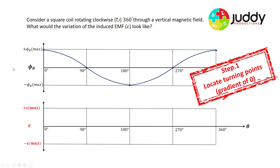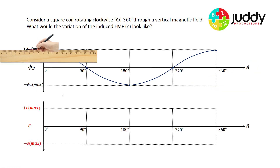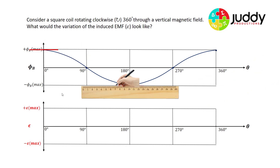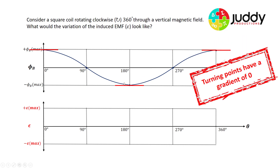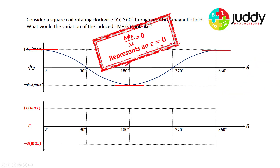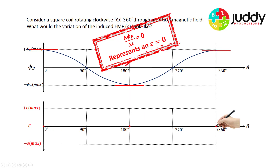First, let's locate the turning points of the magnetic flux versus angle graph, as these represent gradients of zero. Here's our first turning point, our second at 180 degrees, and our third at 360 degrees. So we have turning points at zero degrees, 180 degrees, and 360 degrees where the gradient is zero. When the gradient is zero, the EMF induced will be zero — giving us three points on our sketch at zero, 180, and 360 degrees.